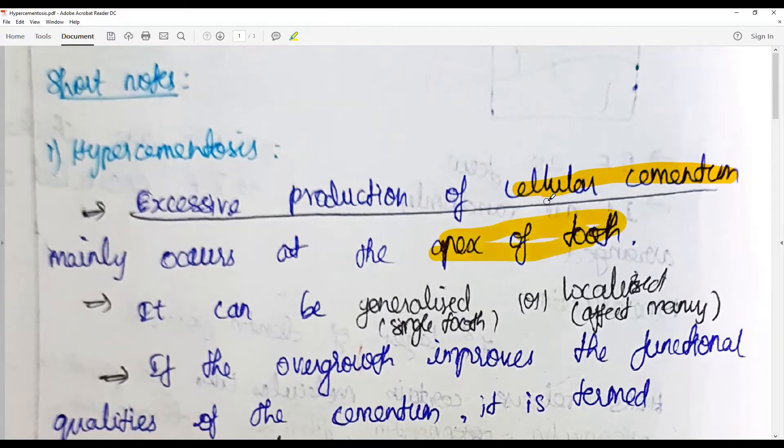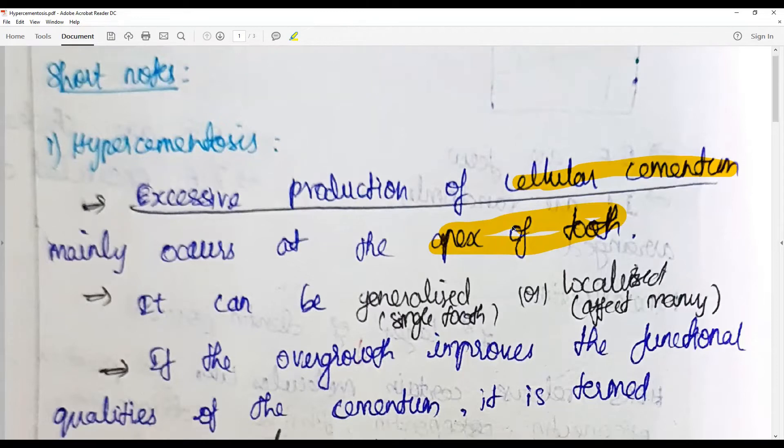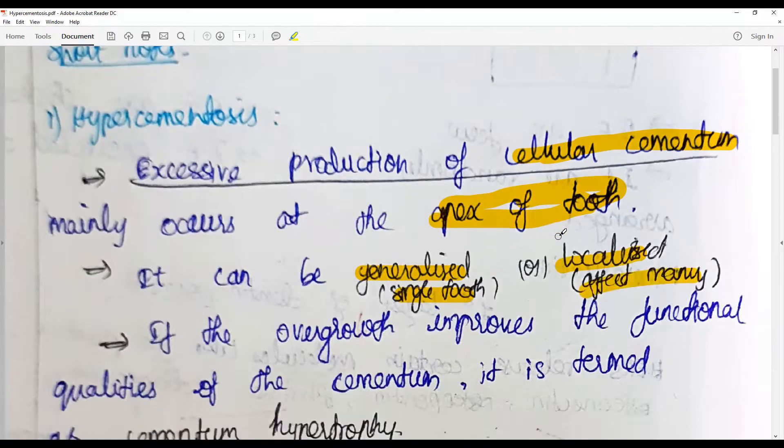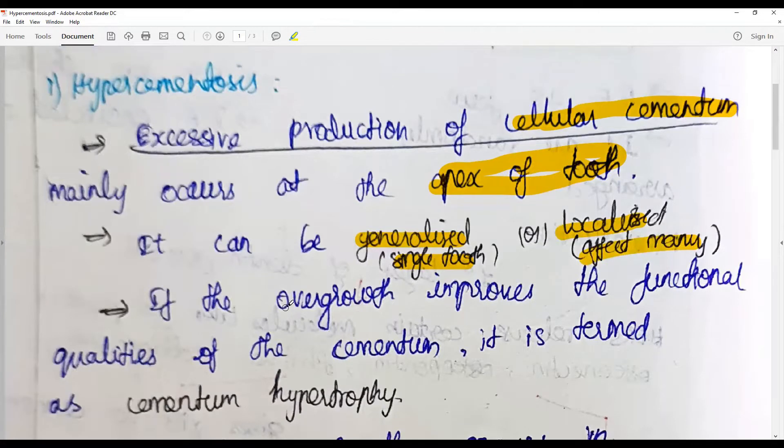Excessive production of cementum, usually a cellular variant in the apex of the tooth, can be generalized when involving a single tooth or a single surface, or localized, affecting a couple of teeth in the same area.